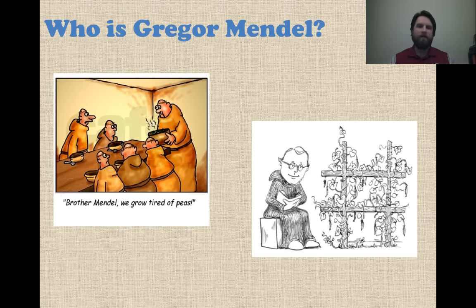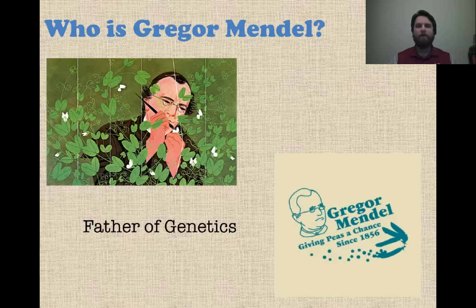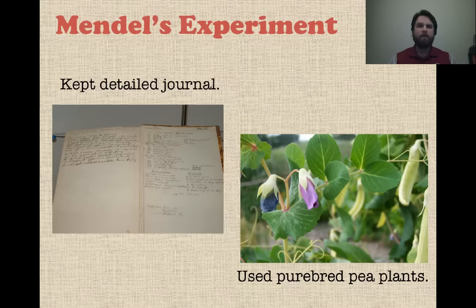Gregor Mendel was an Austrian monk and he became very interested with how traits are passed down from generation to generation. So in the mid 1800s, around 1856 to 1863 thereabouts, he devised a plan to test this. He actually did this with pea plants. Gregor Mendel is often called the father of genetics or the father of modern genetics because of the work he did in identifying how traits are passed down.